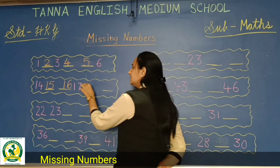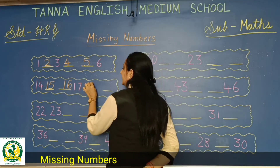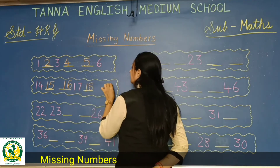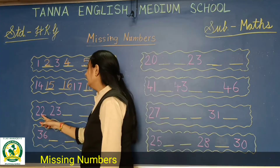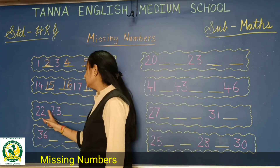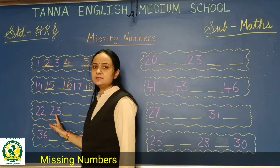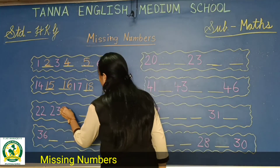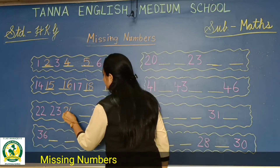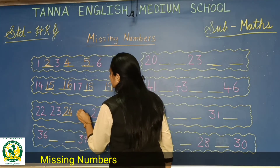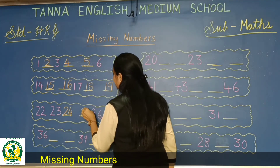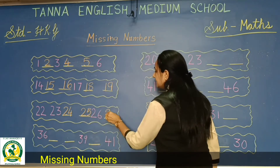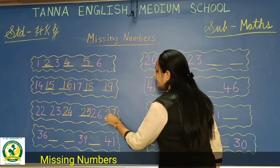So what will come after 17? 18. And yes, 19. Then 22, 23. So what will come after 23? 24. Then 25. 26 is written. 27.